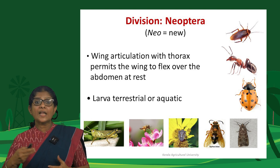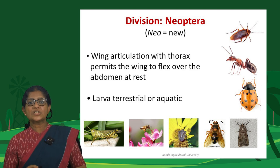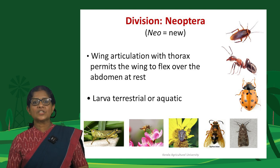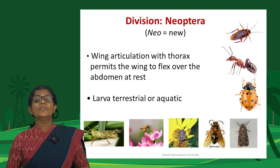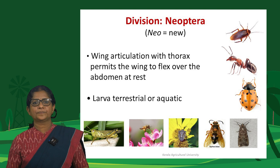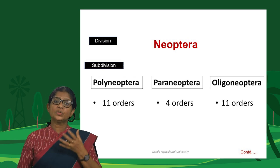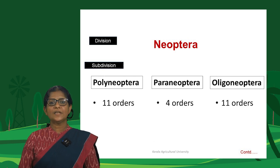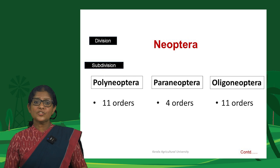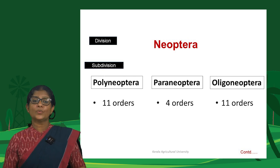Division Neoptera — 'neo' (new) and 'ptera' (wing) — have a new type of wing articulation that permits flexing of wings over the back of the abdomen while at rest, and larvae can be either terrestrial or aquatic. Neoptera is further classified into three subdivisions: Polyneoptera (11 insect orders), Paraneoptera (4 orders), and Oligoneoptera (11 insect orders).